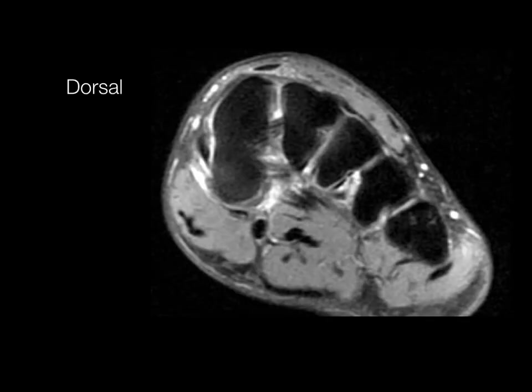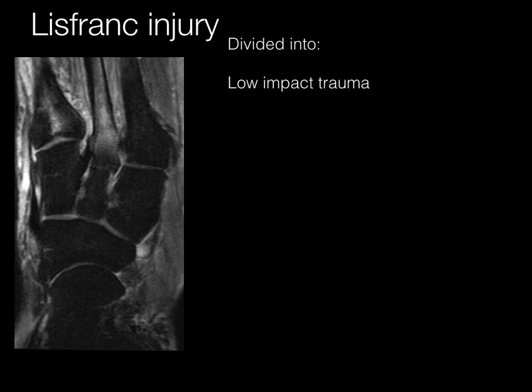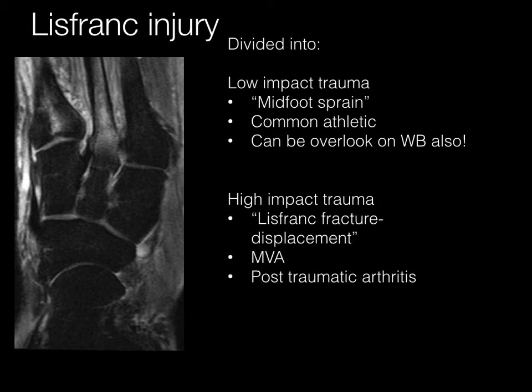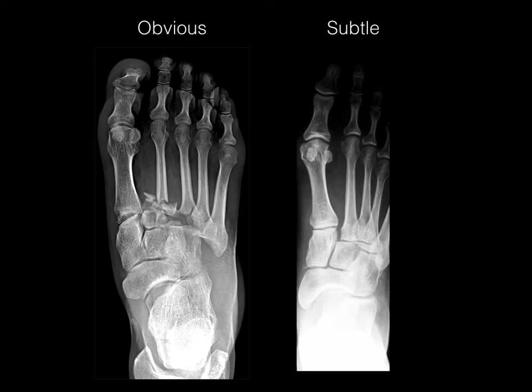The Lisfranc ligament is broken down into three segments: the dorsal, the intraosseous, and the plantar. The intraosseous is the one we usually see injured. Injuries can be divided into low-impact, otherwise known as a mid-foot sprain — common in athletic injuries and can be overlooked on weight-bearing X-rays — and high-impact fracture displacement injuries seen in MVAs, which can cause post-traumatic arthritis. So you have obvious high-impact fractures and then subtle low-impact fractures.